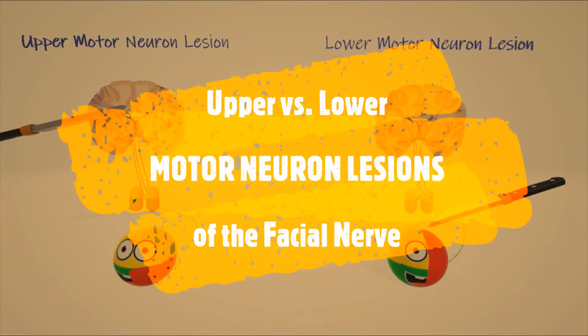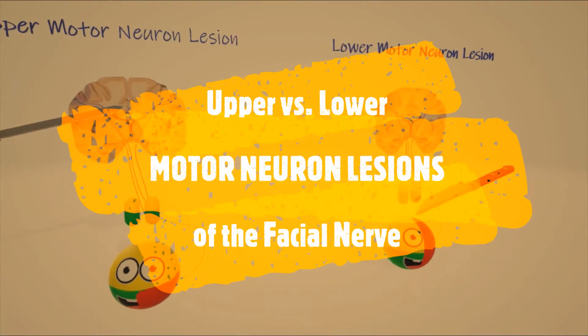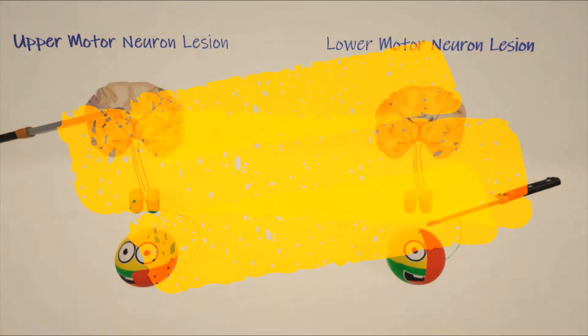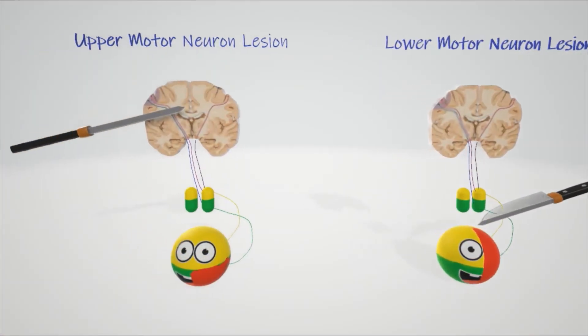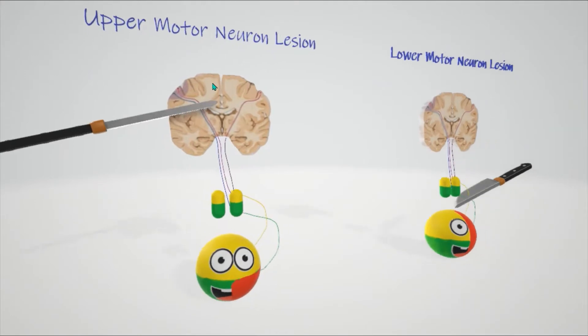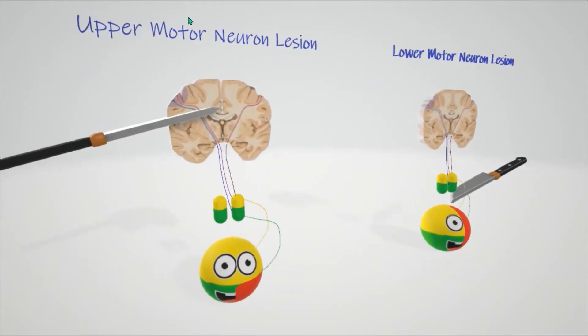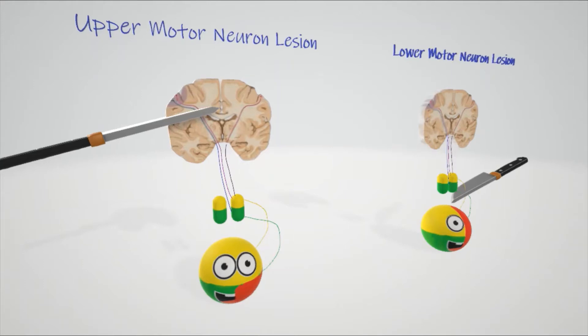Okay, let's try to simplify neuron lesions of the facial nerve, the upper versus lower motor neuron lesions of the face. So let's start over here and talk about what's going on. This is the upper motor neuron lesion.